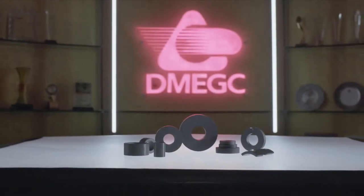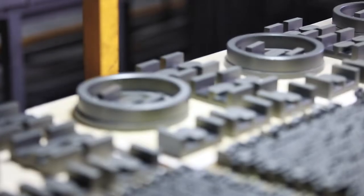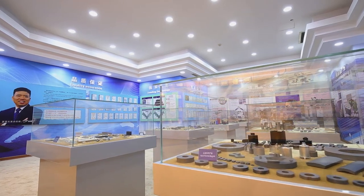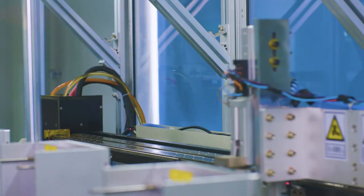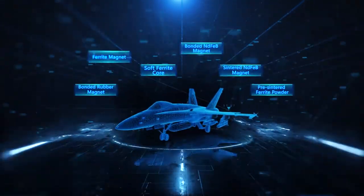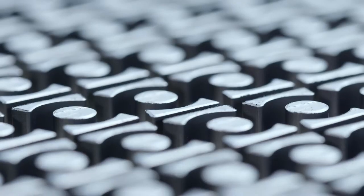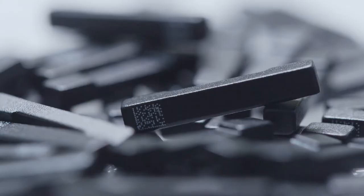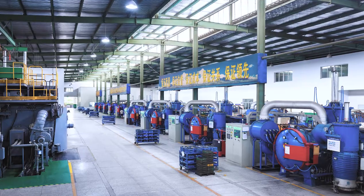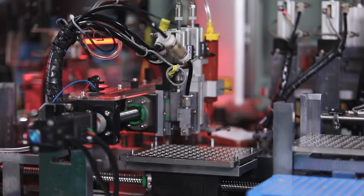Thirty years ago, DMEGC started its journey with a small piece of magnetic material. The pioneers of DMEGC opened a unique path of innovation, as the growing demand of human beings called for the renewal of products and technologies time and again. DMEGC has developed tens of thousands of magnetic material products from the first magnetic material product and grown into a high-tech enterprise integrating magnetic materials, new energy resources, and devices from a single production line.